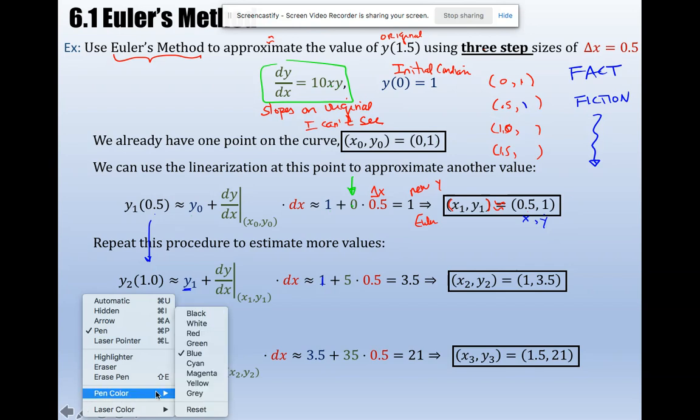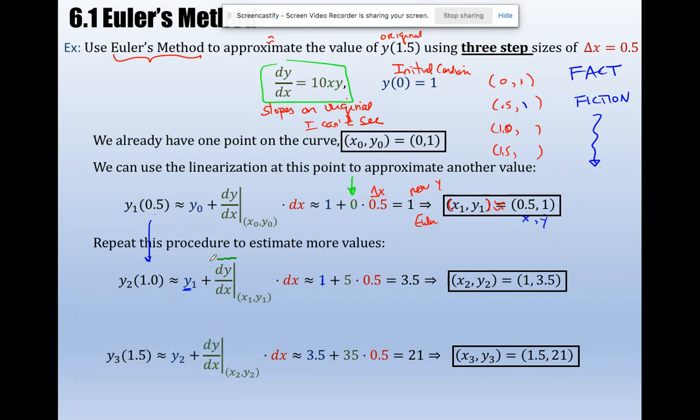Old y plus slope. Where do I go for my slope? Up here. 10 times 0.5. 10 times a half, 5 times 1 is 5, that's where this number came from. And then delta x is always 0.5 because that's what my delta x is. Did that computation and I got a new y.